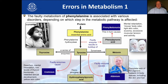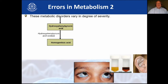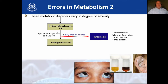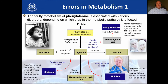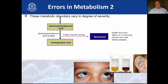Transaminase can also be a problem. These metabolic disorders vary in degree of severity — the further along the pathway the enzyme is, possibly the less effect it will have. Hydroxyphenylpyruvic acid oxidase is supposed to convert hydroxyphenylpyruvic acid into maleylacetoacetic acid. But if that enzyme is broken or the DNA has mutated, causing a faulty enzyme, you get death from liver failure, or if surviving, chronic liver and kidney disease.